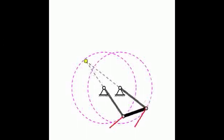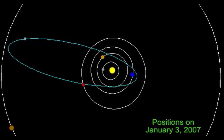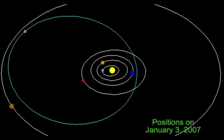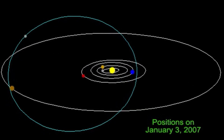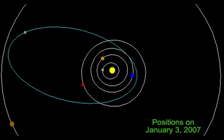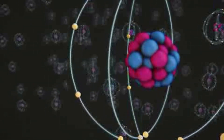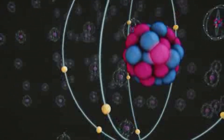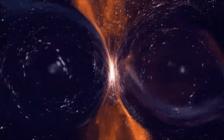Lebesgue L² spaces are also examples of Banach spaces, which are more general vector spaces with a norm but not necessarily an inner product. The theory of quantum mechanics is a fundamental framework for describing the behavior of matter and energy at the atomic and subatomic scales. Quantum mechanics was developed in the first half of the 20th century by physicists such as Max Planck, Albert Einstein, Niels Bohr, Werner Heisenberg, Erwin Schrödinger, Paul Dirac, John von Neumann, and others.